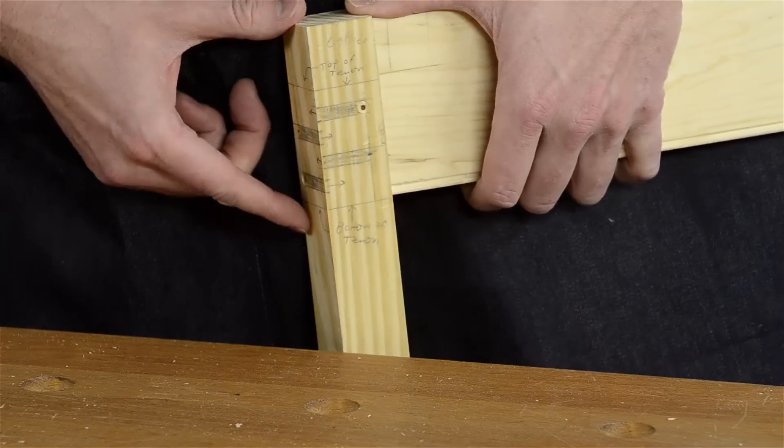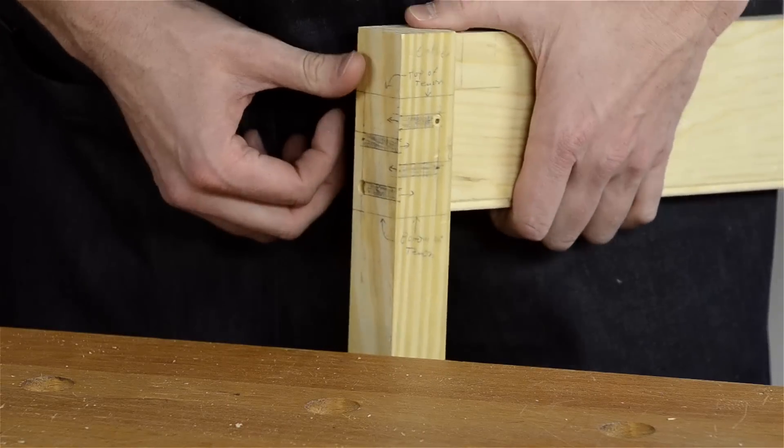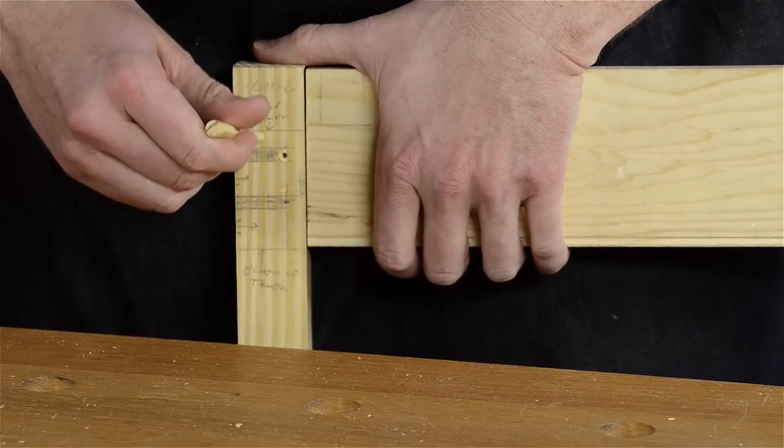The two main things to be concerned about when you're doing this is the vertical spacing and the lateral spacing. As far as vertical spacing goes, you want to make sure that you're not so high that you are too close to the edge of the tenon.